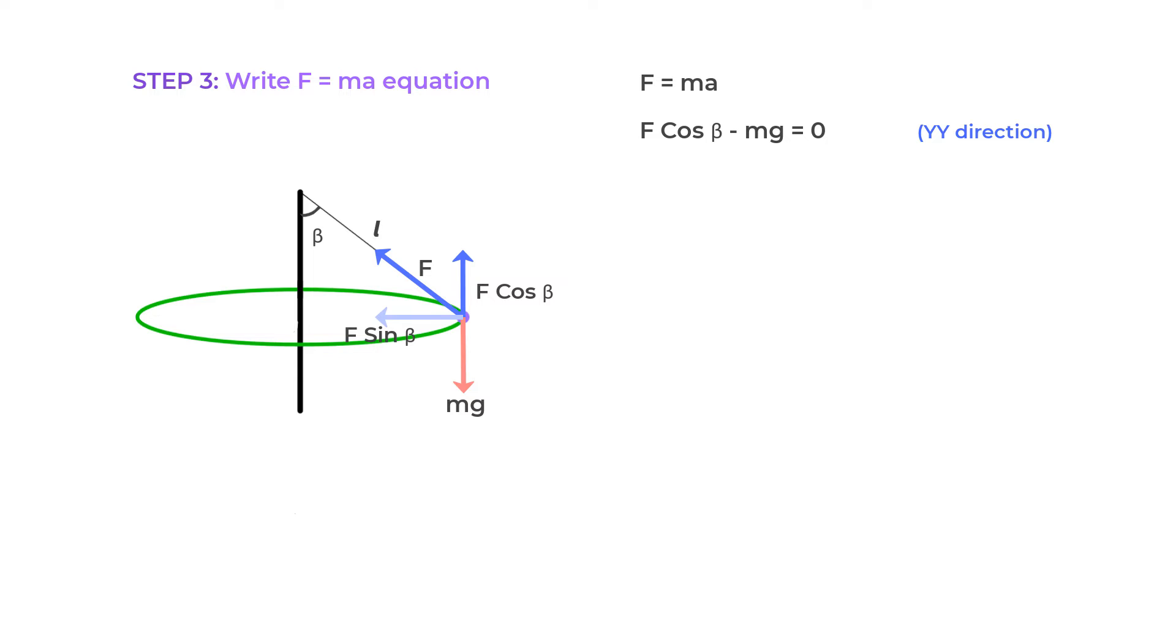So F cos beta equals Mg. Then we can see that the horizontal component gives us the centripetal force needed for circular motion, or we can write F sin beta equals M A_radial which equals MV squared upon R. A_radial is nothing but the centripetal acceleration. V is the speed of the ball and R is the horizontal distance from the ball to the vertical axis. Also, we can see that R equals L sin beta.